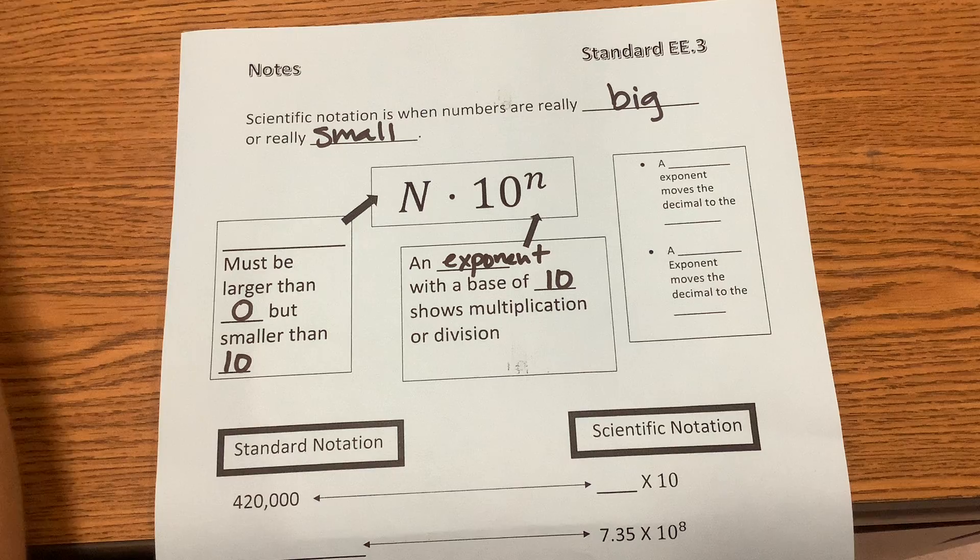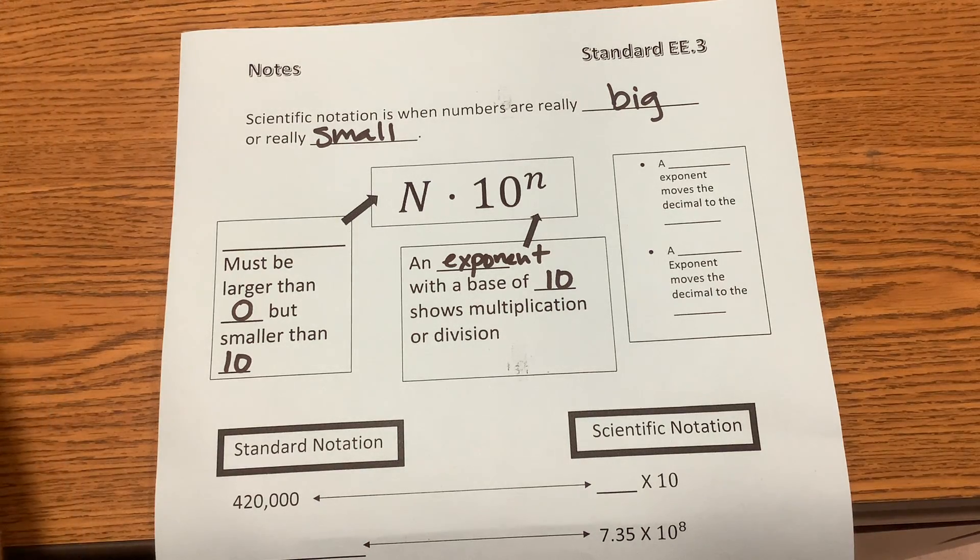Okay, now, exponents are always going to be multiplication, right? But we have positive exponents and we have negative exponents.